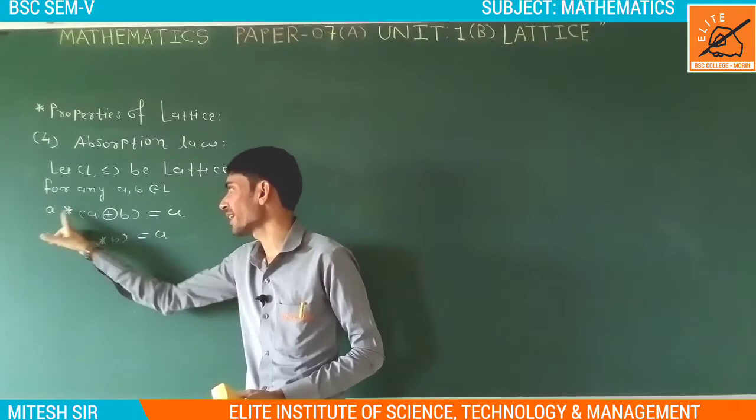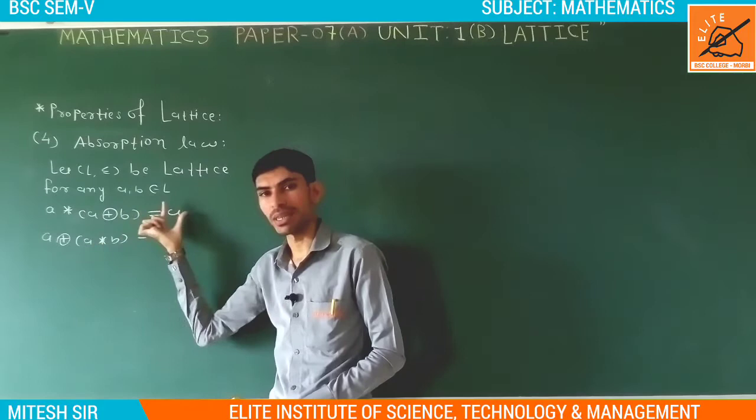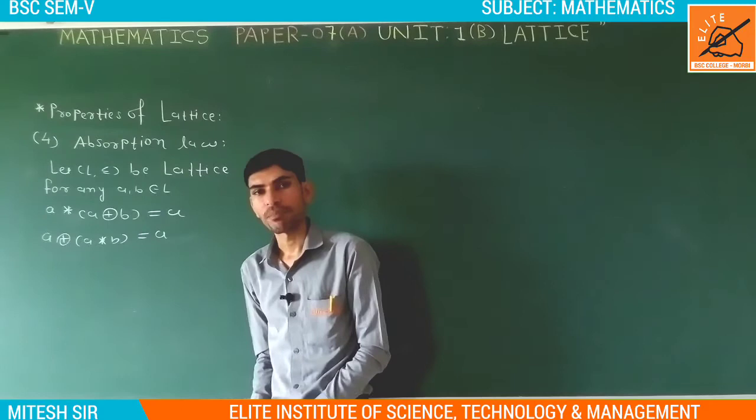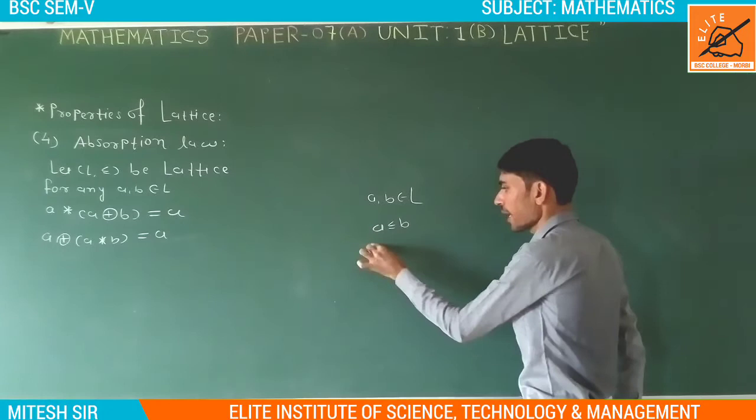We will prove property number four. First result: A star (A ring sum B) is equal to A. Second result: A ring sum (A star B) is equal to A. As we know, for any two elements A belonging to L, if A is related to B and B is related to A, then A is equal to B.